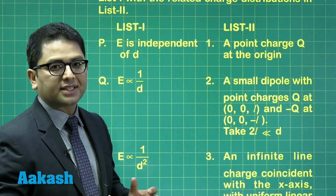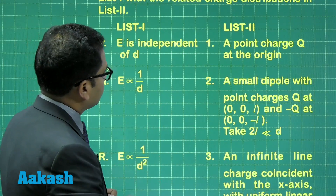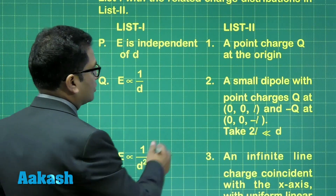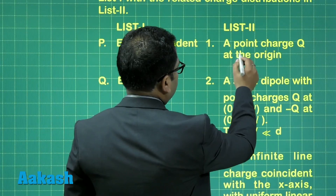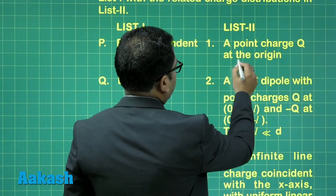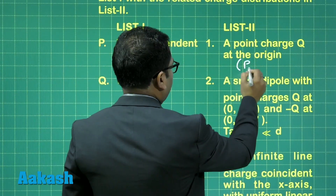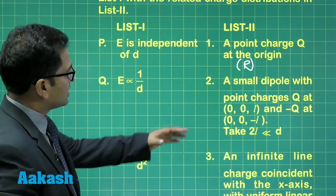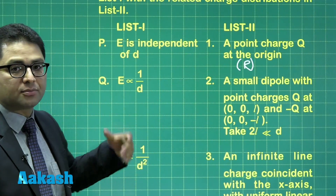For a point charge Q at the origin, the electric field due to that point charge is inversely proportional to D². So option one on this side will have R as the correct match. It's easier to start with this one.